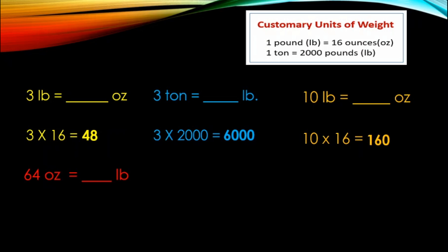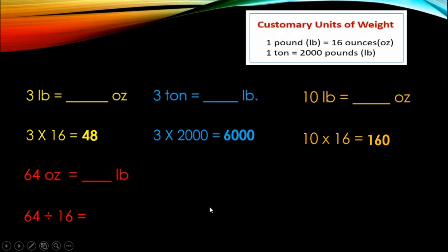Next problem: 64 ounces equals how many pounds? Ounces to pound — right to left, smaller unit to larger unit, so you will do division. 64 divided by 16, and the answer is 4. 64 ounces equals 4 pounds.